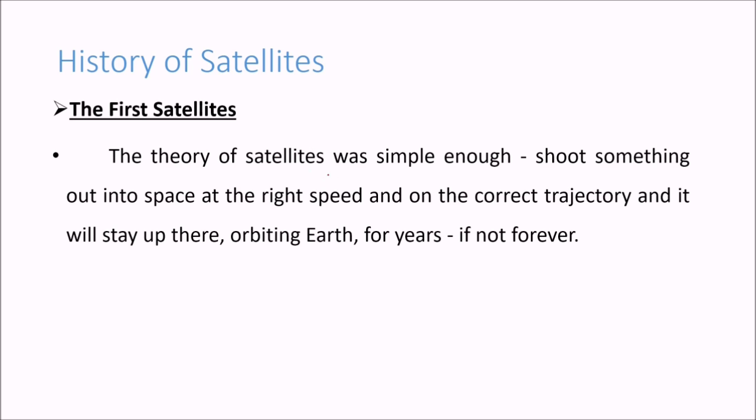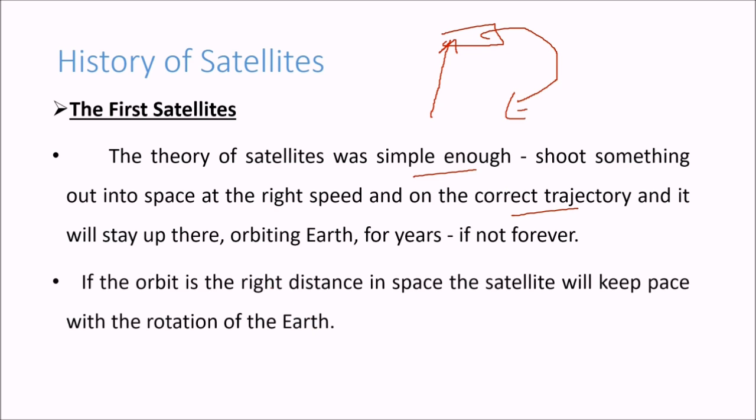The first satellites, history. The theory of satellite was simple enough. Shoot something into space at the right speed and on the correct trajectory and it will stay up orbiting earth for years, if not forever. If the orbit is the right distance in space, the satellite will keep pace with the rotation of the earth, because earth also revolves around its axis.